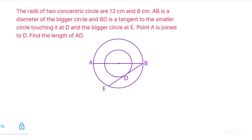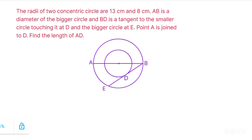Here is another question: the radii of two concentric circles are 13 centimeter and 8 centimeter. AB is a diameter of the bigger circle and BD is a tangent to the smaller circle touching it at D and the bigger circle at E. Point A is joined to D. Find the length AD.